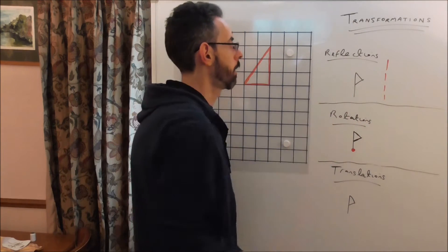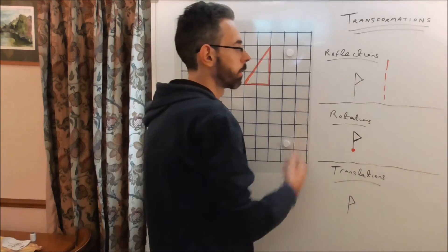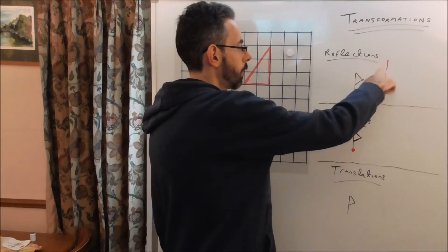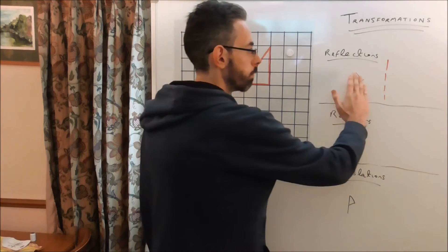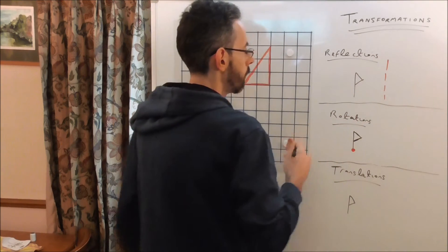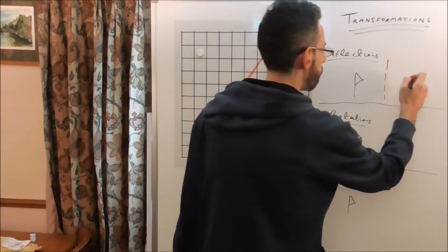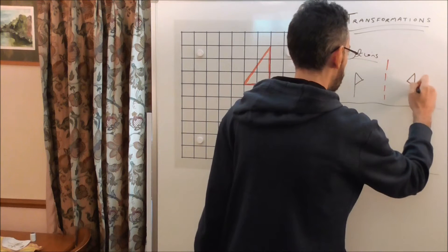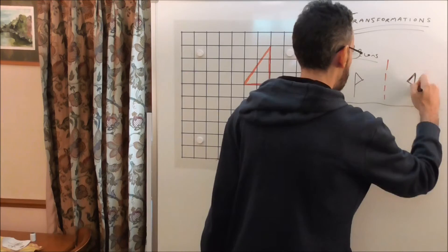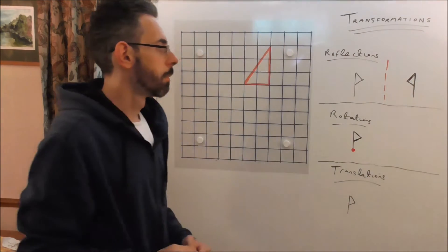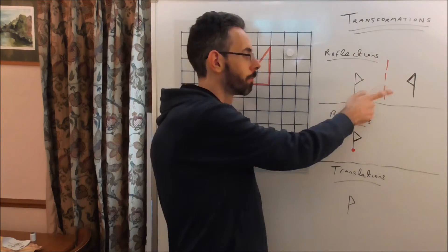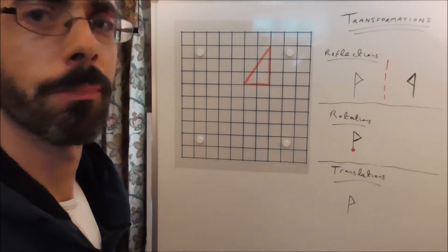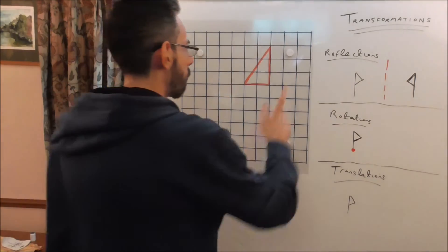But I could mention what the others are quickly. Reflections — you've probably heard of that before. To reflect this shape in this mirror line, you'd draw its mirror image on the other side of the mirror line, the same distance away from the line. That's a reflection. To do it accurately I need to do it on a square grid — that's just a sketch. We're not doing reflections today.